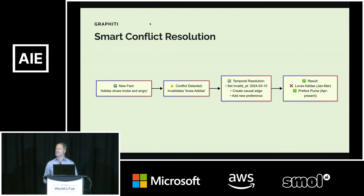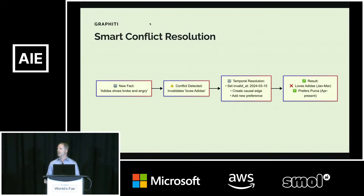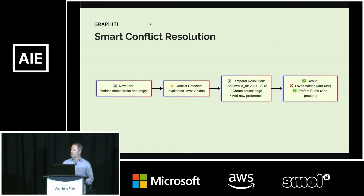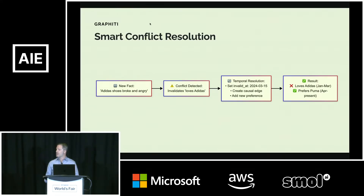With RAG, we end up with a bunch of contradictory embeddings with no resolution in the vector database. If we're updating the brand preference, we'll have a new brand preference fact in the vector database. However, Graphiti understands that broken shoes invalidate the love relationship, which creates a causal relationship between those three events: broken shoes result in disappointment, which results in a brand preference change. Graphiti doesn't delete the history of facts as they're invalidated — it marks them invalid instead. We store a sequence of state changes on the graph, which allows your agent to reason with those state changes over time.